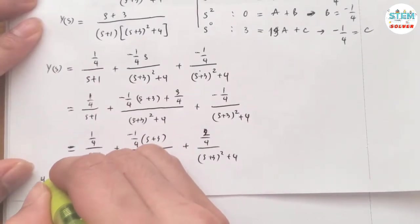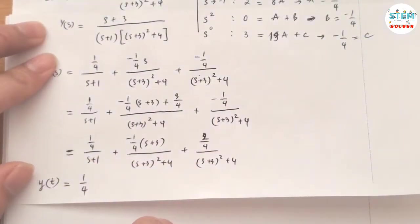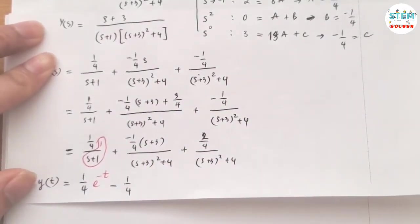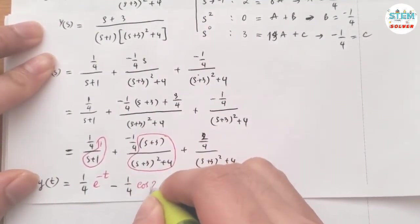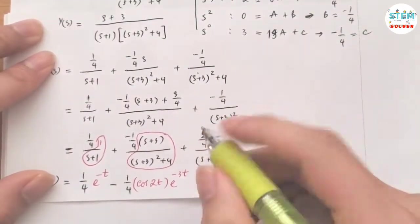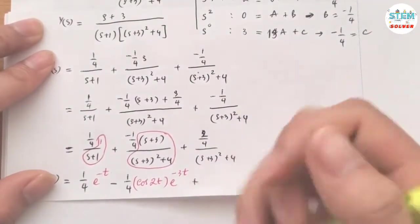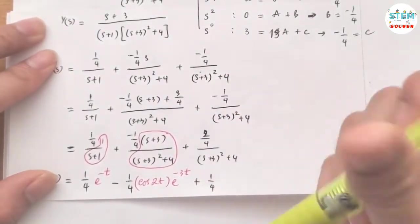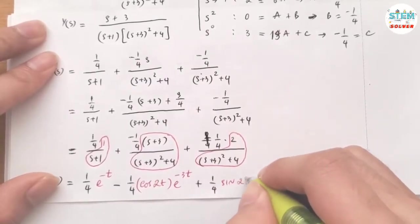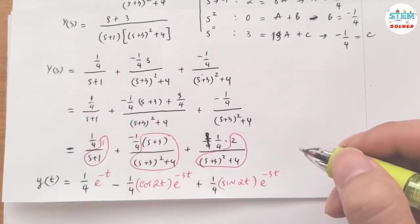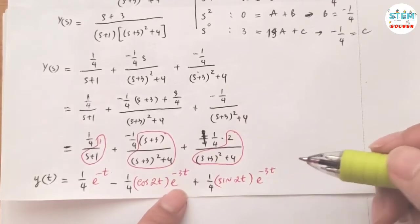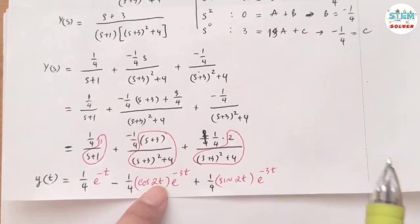Applying the inverse Laplace transform to both sides, on the left we get y of t. On the right, 1 fourth times the inverse of 1 over s plus 1 gives 1 fourth e to the negative t. Using the s-axis translation theorem with shift 3, the term negative 1 fourth times s plus 3 over s plus 3 squared plus 4 gives negative 1 fourth e to the negative 3t cos 2t. And 1 half over s plus 3 squared plus 4 gives 1 fourth e to the negative 3t sin 2t. This is the final answer.